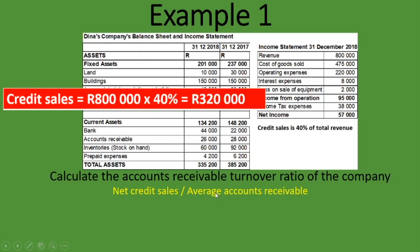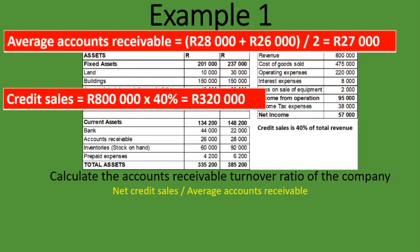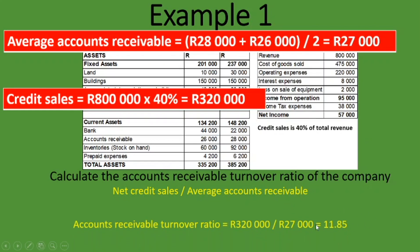Next we compute the average accounts receivable from the balance sheet. You can see 2017 is on the right and 2018 is on the left. Under current assets, accounts receivable for 2017 is 28,000 rand — which is also the accounts receivable at the beginning of 2018. The end of 2018 is 26,000 rand. We add the two together: 26,000 plus 28,000, divide by two, and get 27,000 rand — that is the average accounts receivable. So we take 320,000 rand divided by 27,000 rand, and it gives us 11.85. We have just calculated our accounts receivable turnover ratio.